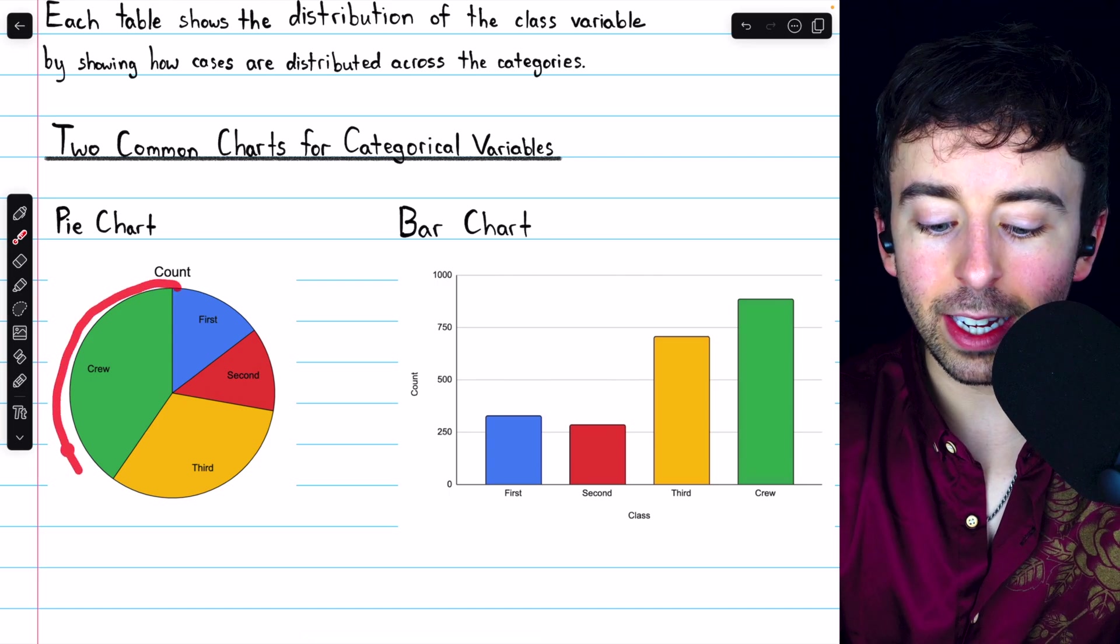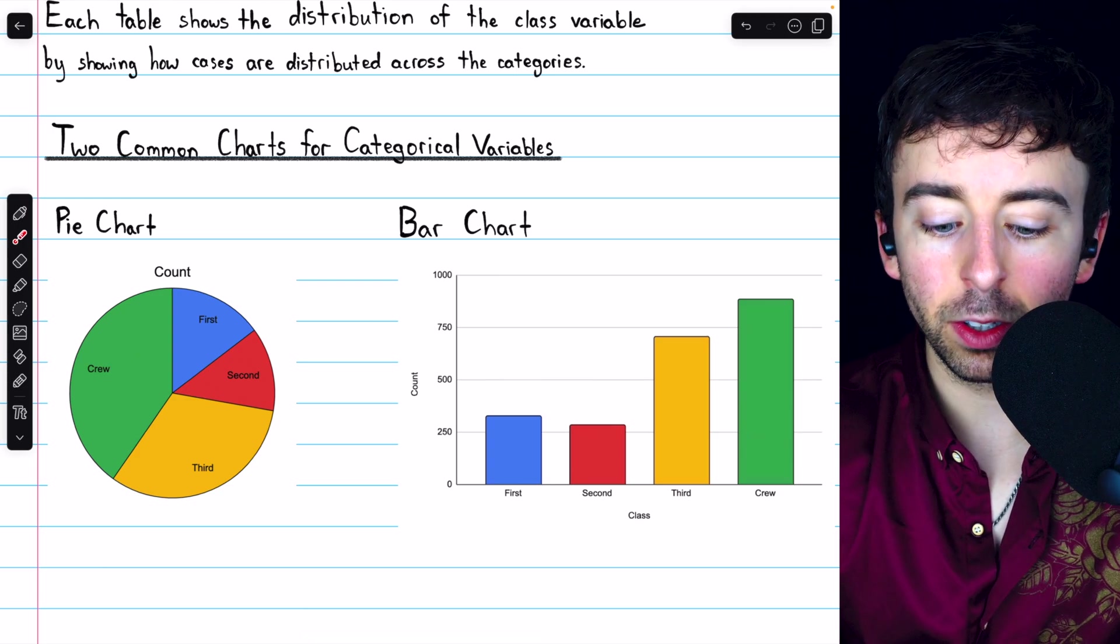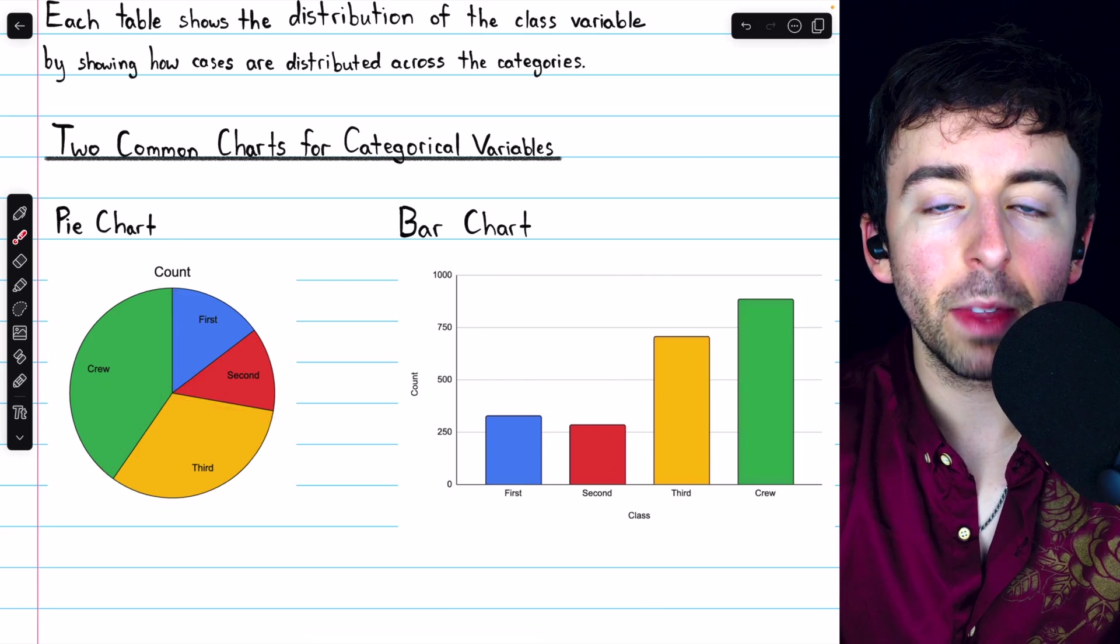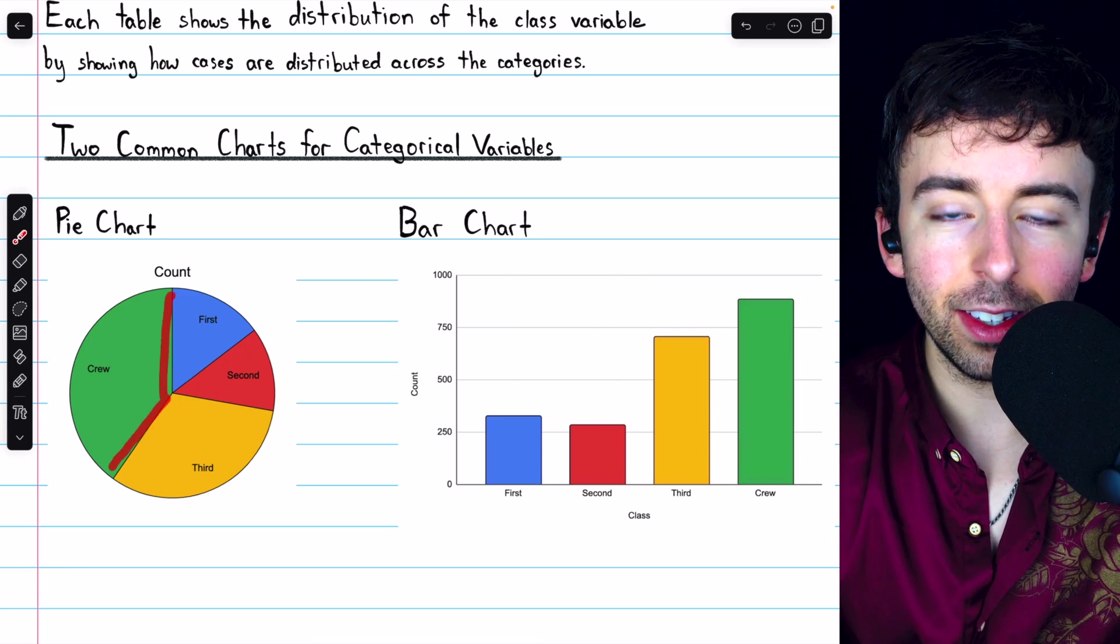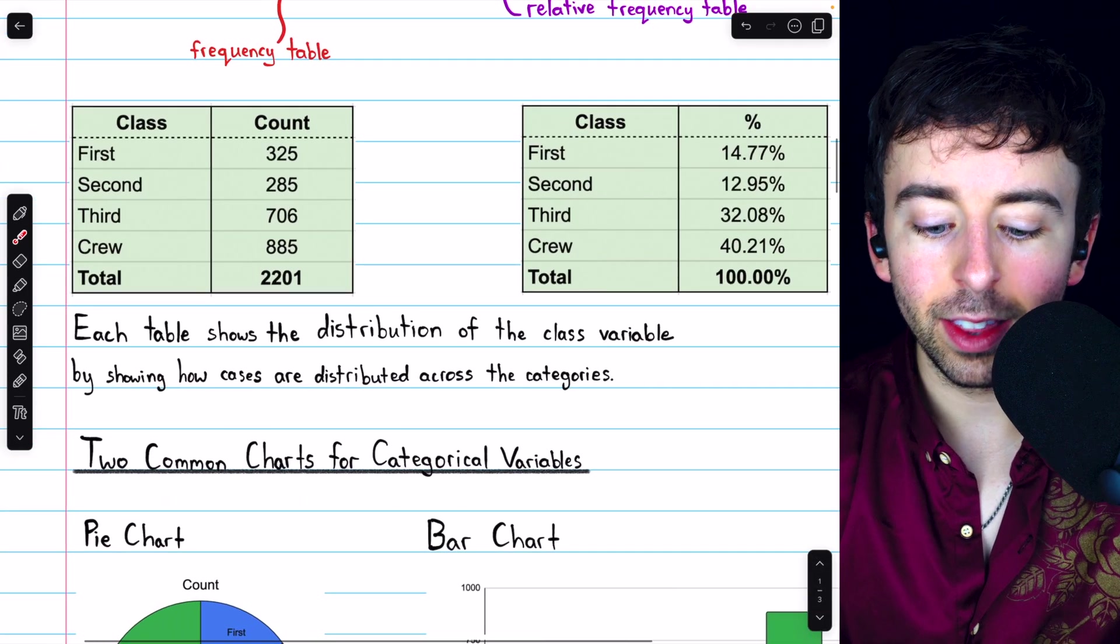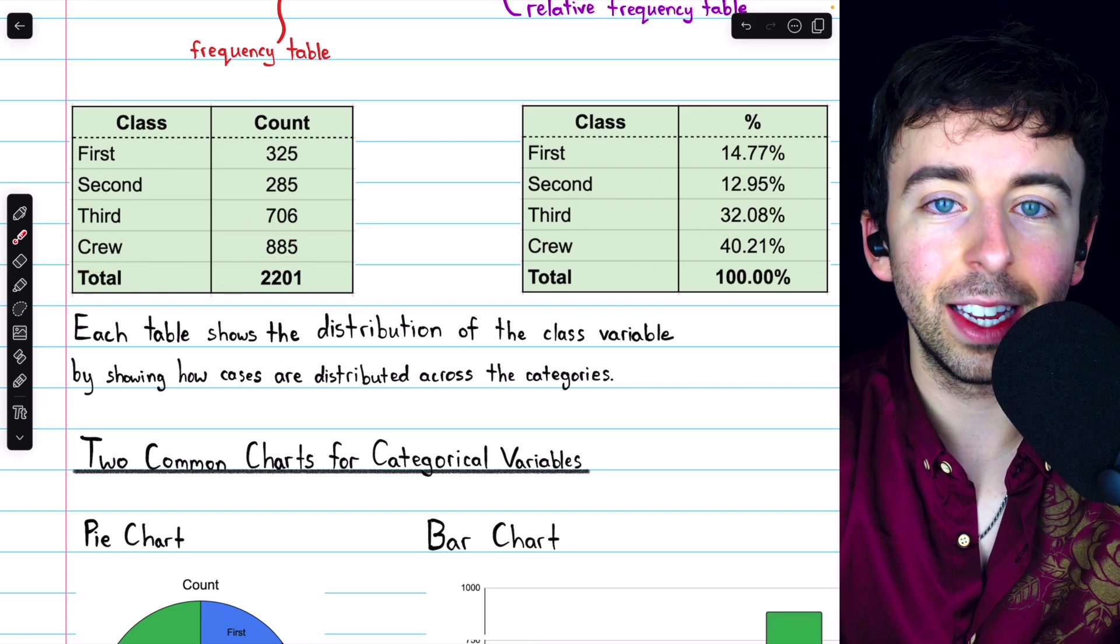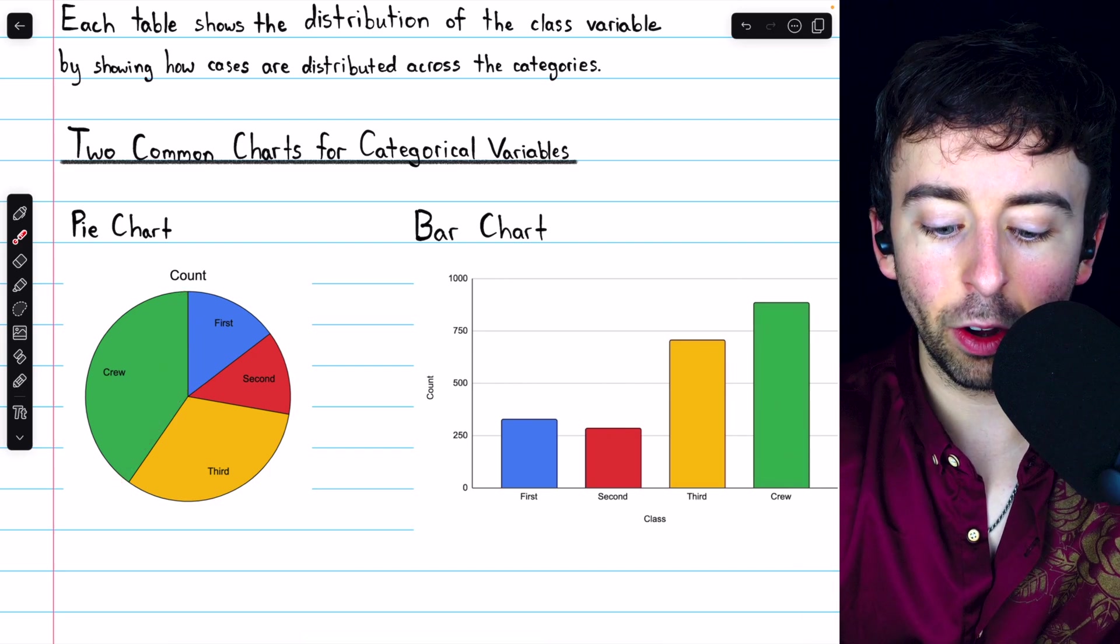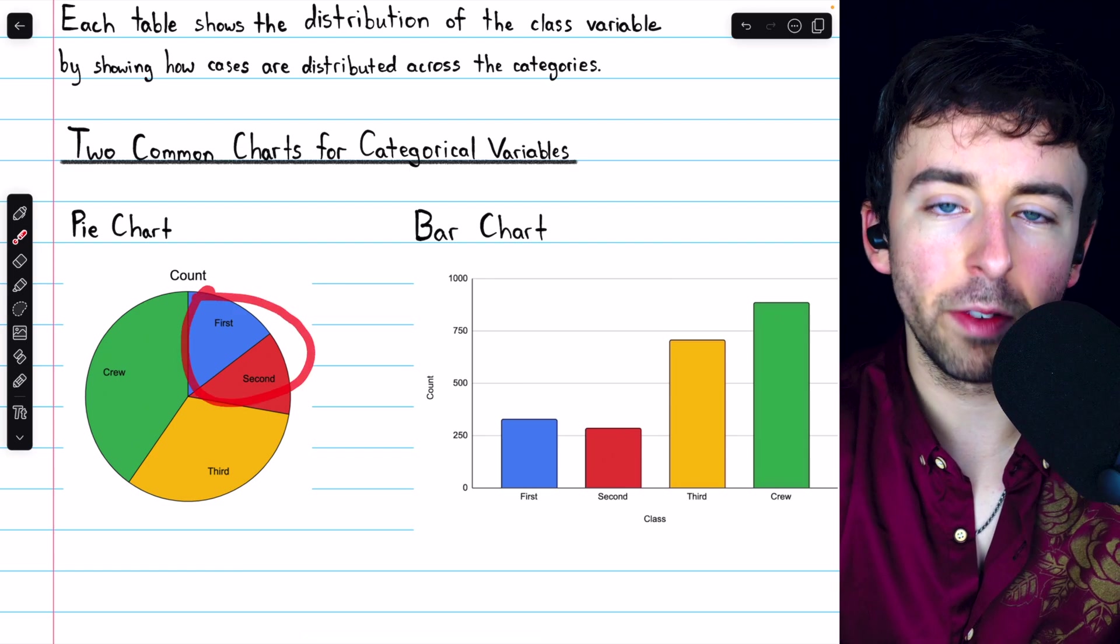This is a pie chart for the number of individuals in each class on the Titanic, and this is a bar chart for the same thing. You can see that a pie chart is a circle, the circle representing the whole, all people aboard the Titanic. The circle is then split into slices, where each slice represents a certain category in our categorical variable of class. Of course, the size of the slice is determined by how many people are in that category. As we saw in our table, the largest slice should be the crew slice. That has the largest number of individuals. And indeed, in the pie chart, you can see that the crew slice is biggest.